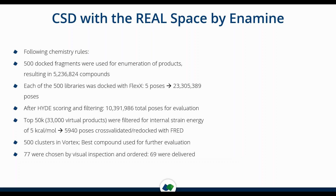We were more efficient in the second stage, using only five poses and ending up with 23 million poses total. Sometimes only one pose came out or there were too many clashes. After HYDE scoring and filtering, we ended up with close to 10 million total poses for evaluation. Subsequently, we took a look at the top 550K, filtered them again — other software was also involved, which I personally welcome for subsequent refinement. Then 77 compounds were chosen for purchasing and 69 were delivered.